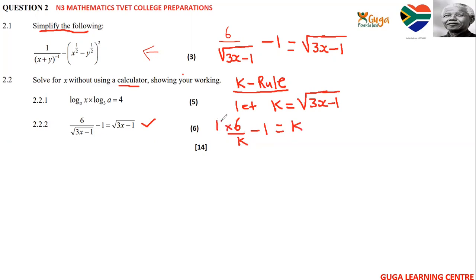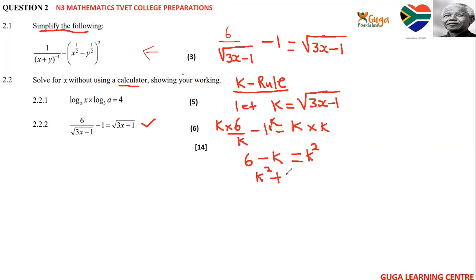The LCD is k, so multiply both sides by k. K and k will cancel, leaving six minus k equals k squared. Taking everything to the other side: k squared plus k minus six equals zero.